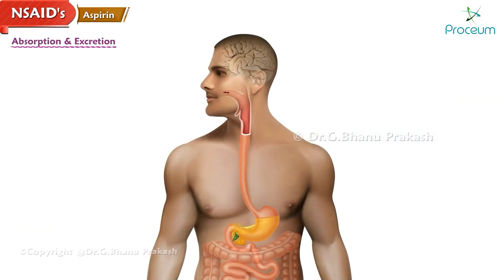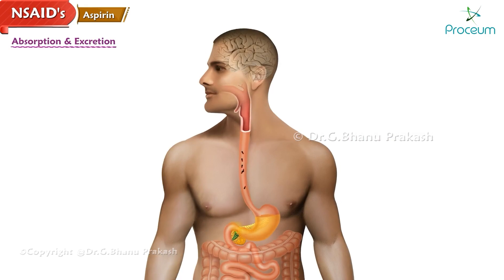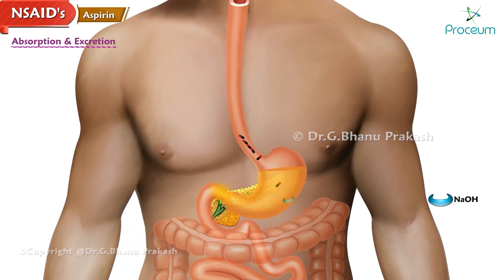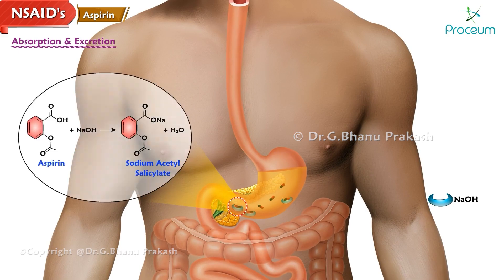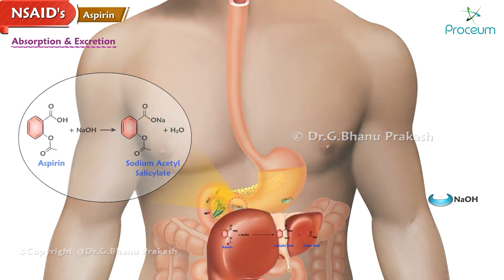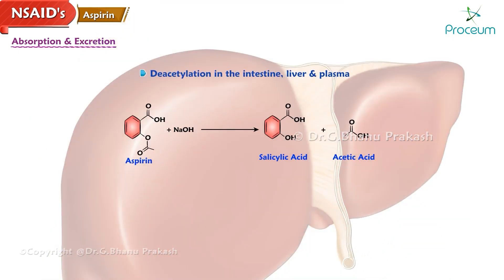Rapid absorption of aspirin occurs following oral administration; however, it has poor water solubility and is therefore combined with an alkali which enhances its absorption. It undergoes deacetylation in the intestine, liver, and plasma to release active salicylic acid. The plasma half-life of aspirin is 15 to 20 minutes and that of salicylic acid is 3 to 5 hours.